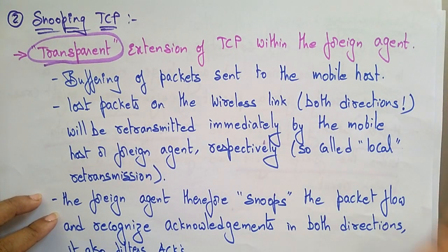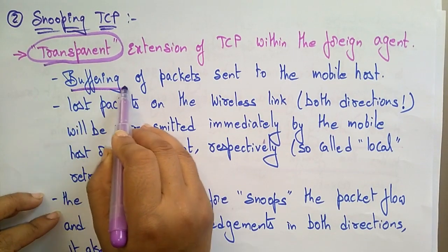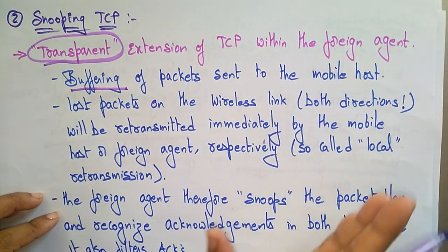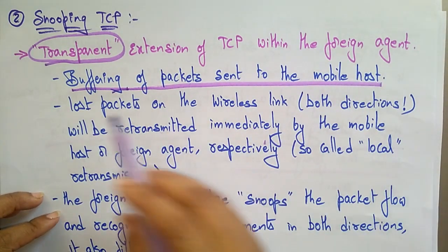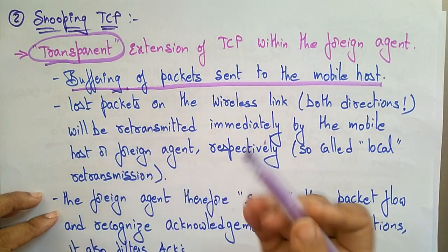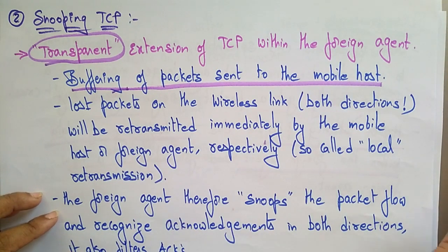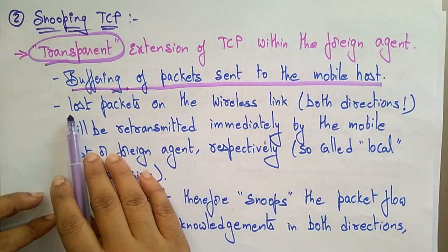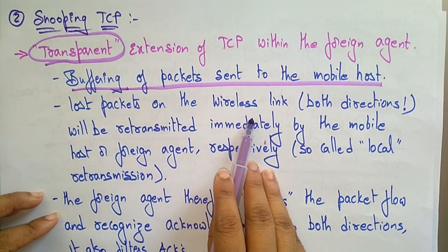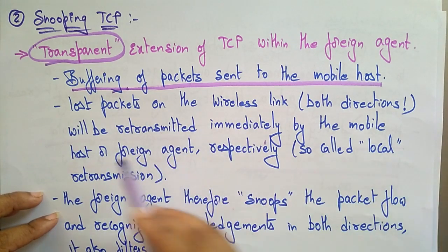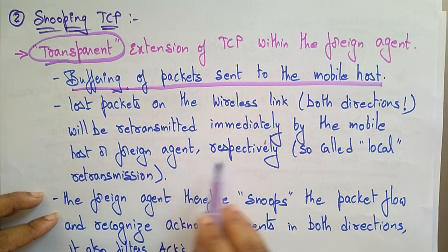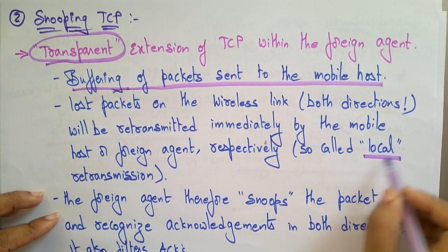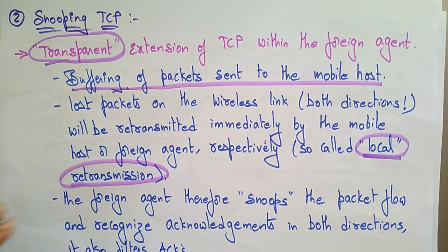The foreign agent — which is the router — holds the buffering of packets and sends them to the mobile host one by one. Suppose a packet is lost on the wireless link; there is a chance of packet loss in wireless communication. In that case, the lost packet on the wireless link in both directions will be retransmitted immediately by the mobile host or foreign agent respectively — this is called local retransmission.